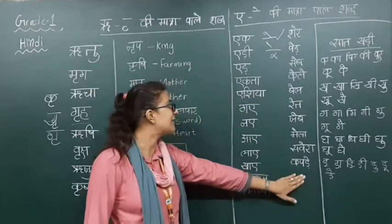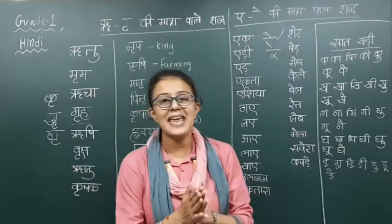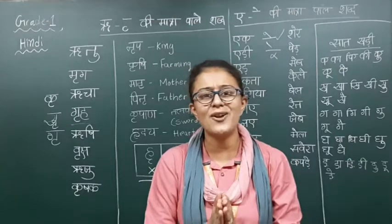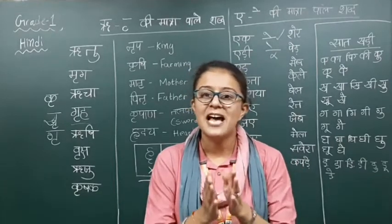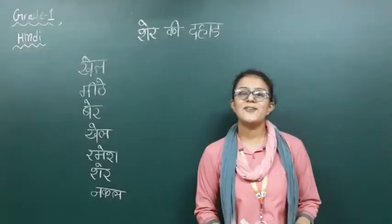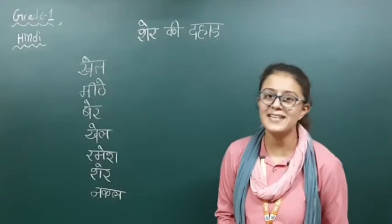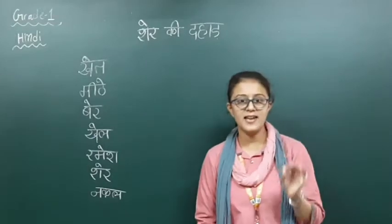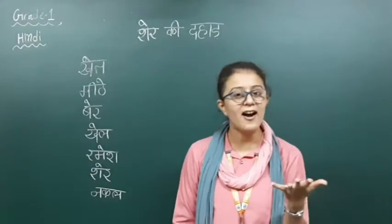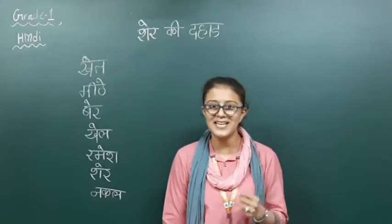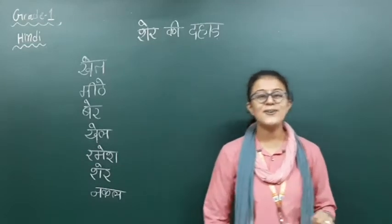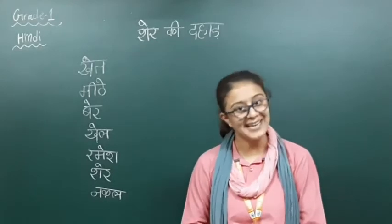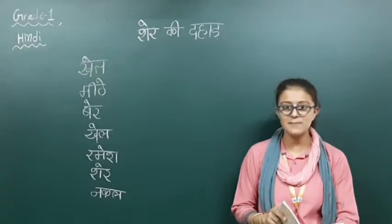So students, this was some of the shabd related to Eki matra. Ab hum Eki matra ke chapter ko padheinge — jo ki bahot hi sundar aur bahot hi interesting chapter hai. Aapko bhi mere saath reading karni hai. Hindi textbook open karo, page number 42 — Shere ki Dahaad. Now shere yaani ki lion — lion ki dahaad bahot hi tez hoti hai, sabhi ko pata hai.